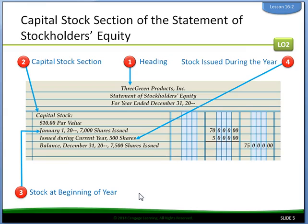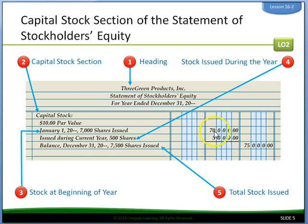On the next line we write issued during the current year: 500 shares. In the second amount column, write the dollar amount of the stock issued — 500 times $10 par value is $5,000. Then on the next line, write balance December 31st: 7,500 shares issued, which is the 7,000 plus the 500. Calculate the total dollar amount of stock issued at the end of the year by adding the beginning stock and the shares issued during the year, and write the total in the third amount column. That doesn't seem so difficult.